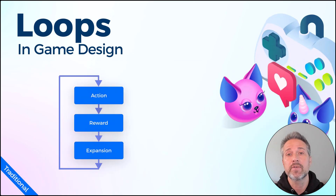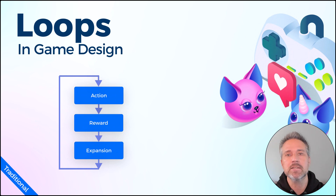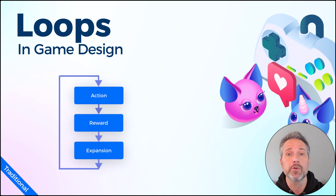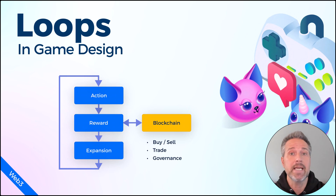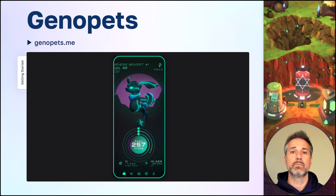A traditional game steps through a loop of gameplay: action, reward, and expansion. Think about the classic game Pac-Man. As Pac-Man moves through the maze, the actions are to turn the character through the maze, the rewards are the pellets collected, and for expansion there are power pellets that change his abilities, temporarily giving him invulnerability where he can chase enemies. With Web3, each time your character is rewarded, you're able to interact with the blockchain — buying and selling currency, NFTs, or other assets on the open market, staking them for increased income, or governance opportunities.